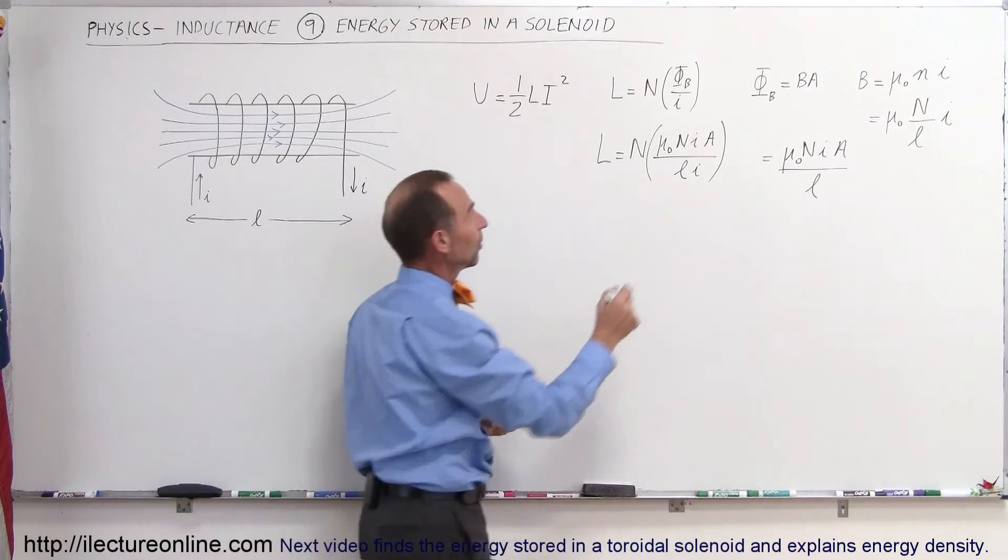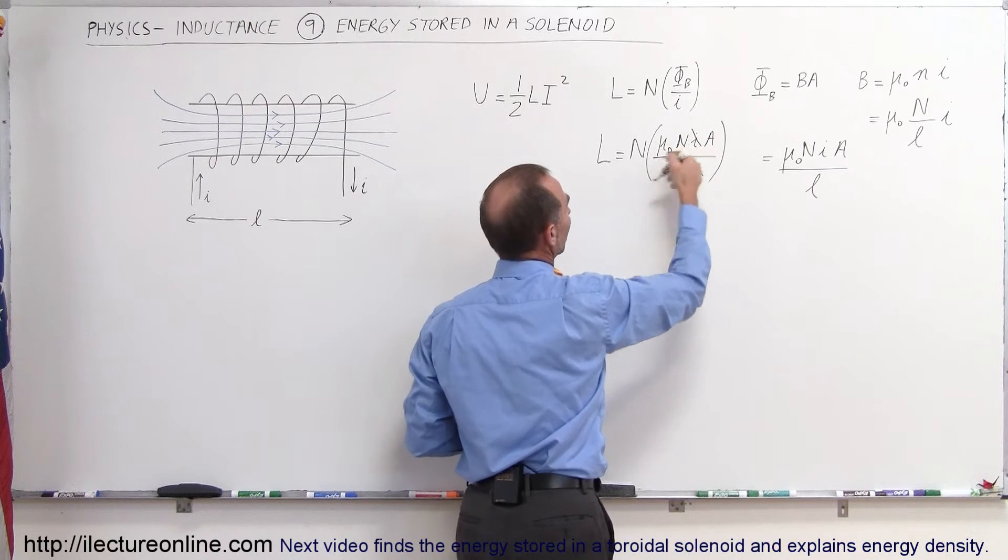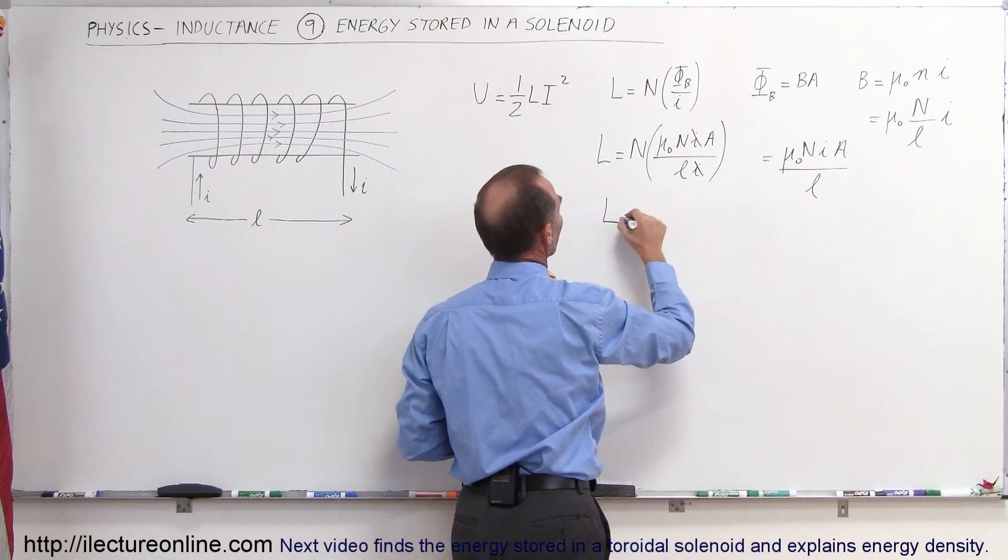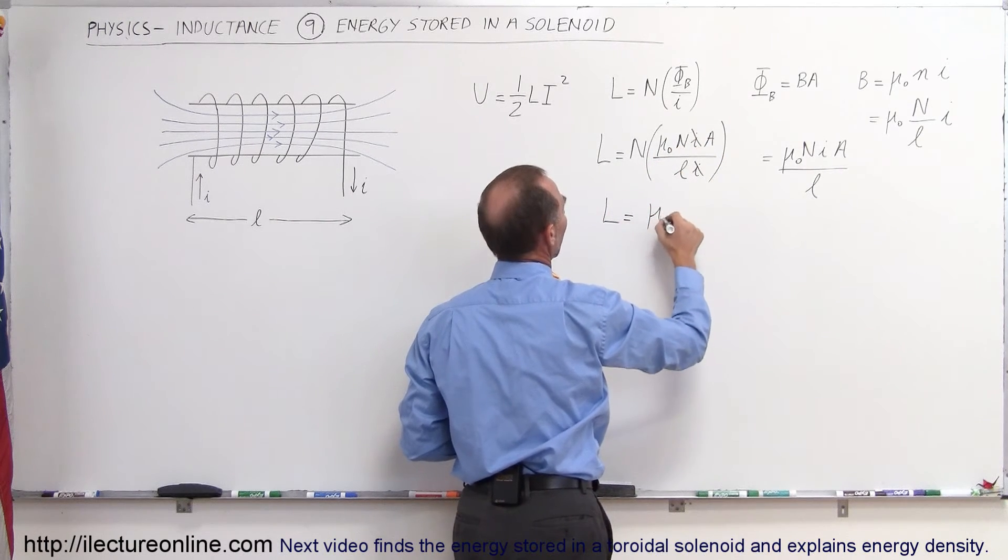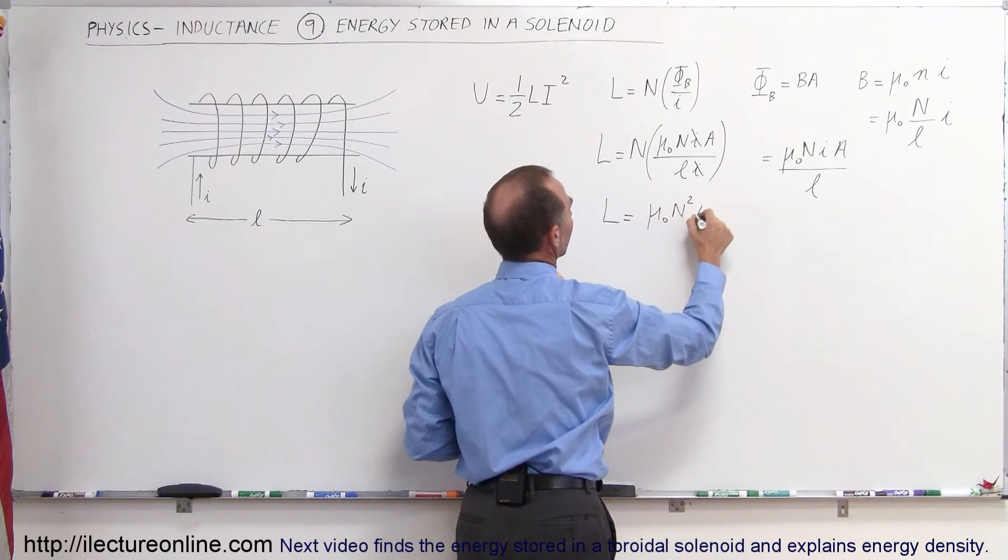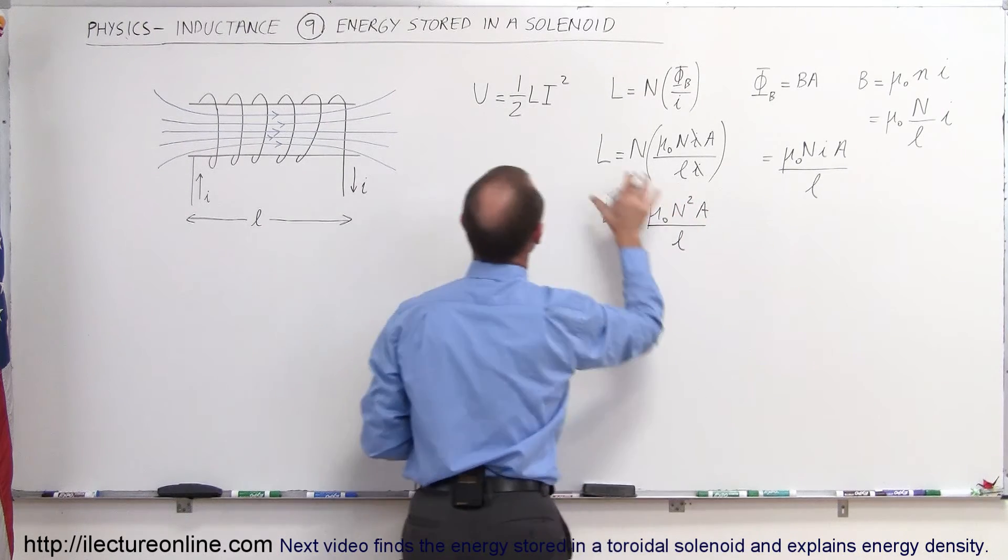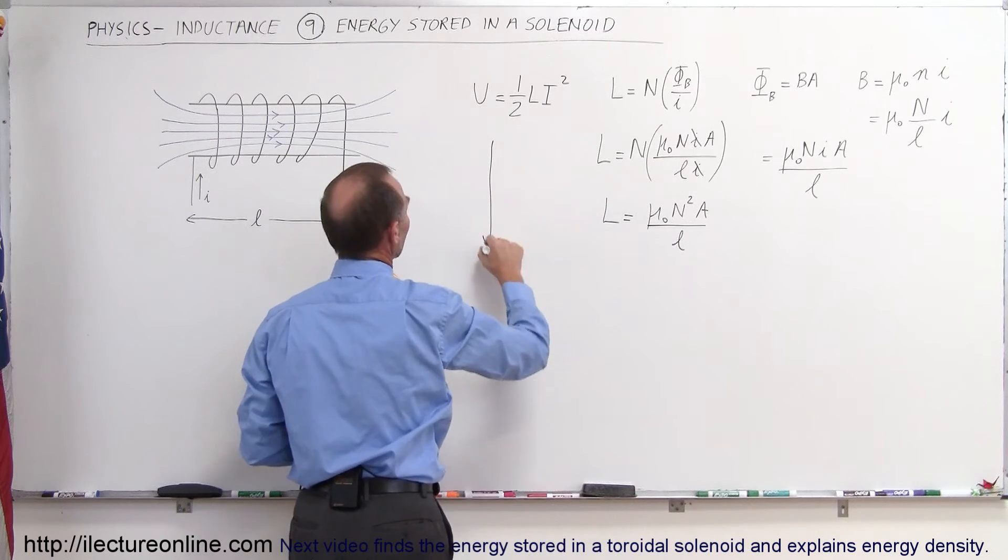And finally that goes in this equation right here, so we can then say that the energy stored in the solenoid is equal to one-half times the self-inductance, which is equal to mu sub-naught times N squared times A divided by the length, so that would be L right there, times the steady state current squared.